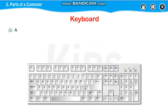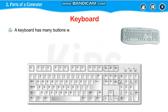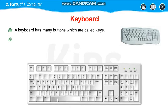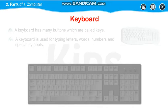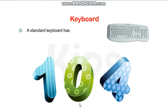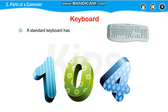Now what is a keyboard? A keyboard has many buttons which are called keys. These buttons are called keys. Keyboard is used for typing letters, words, numbers, and special symbols — like your plus, minus, dollar symbol, and percent symbol. Keyboard has 104 keys.